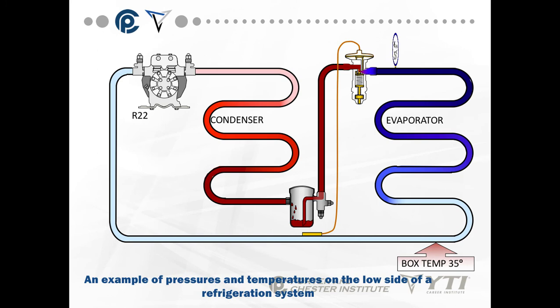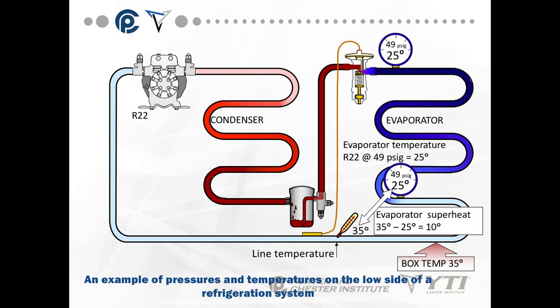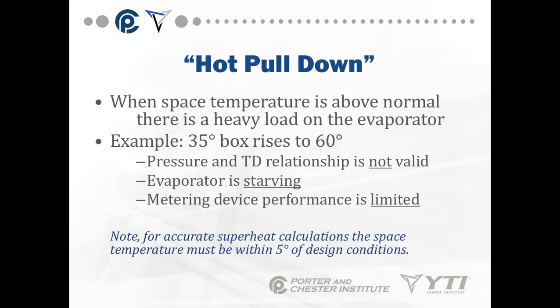To measure superheat, take your coil temperature as close to the liquid line as possible. For example, a pressure of 49 psi corresponds to 25°F; if the suction line temperature is 35°F, then 35 minus 25 equals 10°F of superheat. When space temperature is above normal, there's a heavy load on the evaporator — that's a hot pulldown. For accurate superheat calculations, the space temperature must be within 5°F of design conditions.